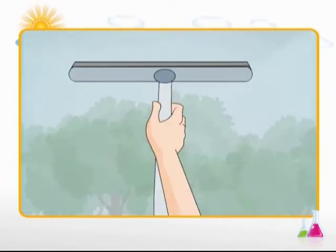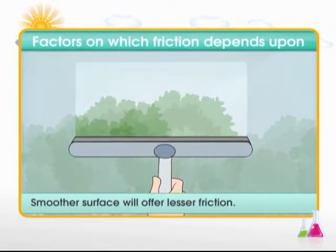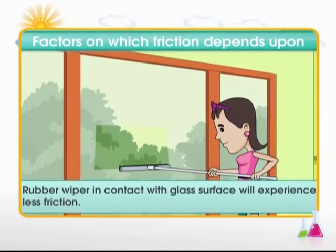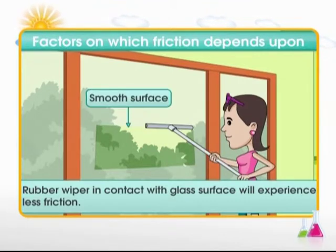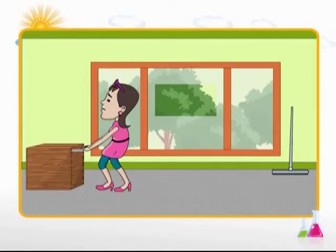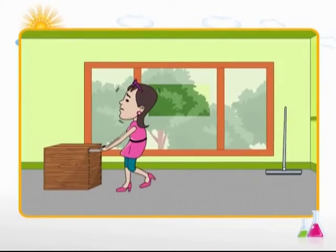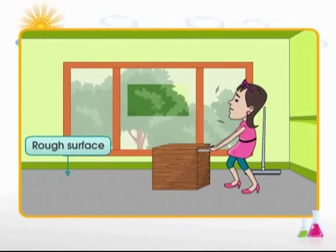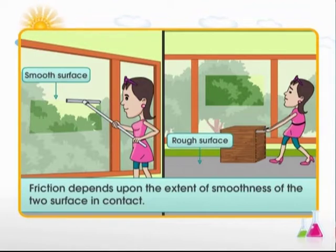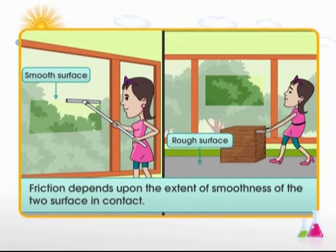Now, let's see what does this frictional force depend upon. Smoother surfaces will offer less friction. For example, a rubber wiper sliding on the glass surface feels very less friction. That's because here the two surfaces in contact are very smooth. On the other hand, a wooden stool kept over a rough cemented floor will feel more friction. Friction depends upon the smoothness of the two surfaces in contact. Smoother surfaces in contact offer less friction. Rougher surfaces in contact offer more friction.